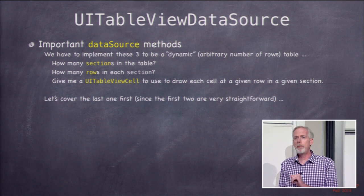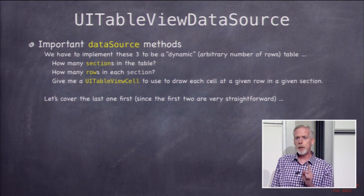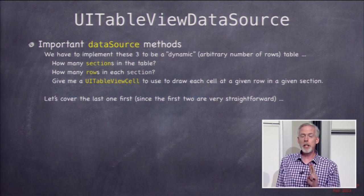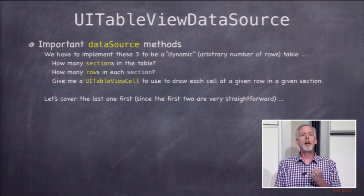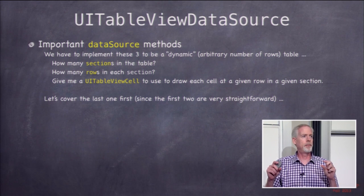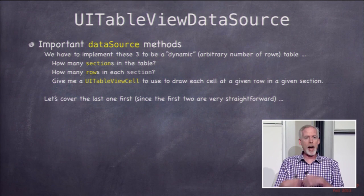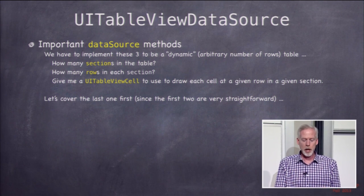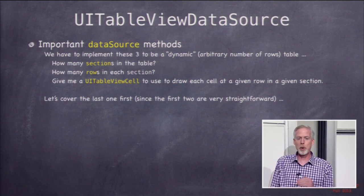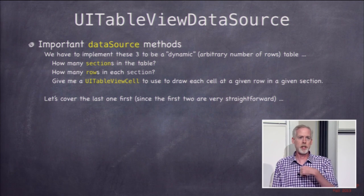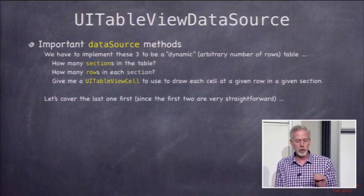What are the important methods in the data source protocol? There are really three: how many sections are in this table, how many rows are in each section, and give me a UITableViewCell view to draw this row. The third one — getting the cell — is the most complex, so let's cover that first. The sections and rows methods just ask you for a number, but getting the cell for each row is a little more involved.